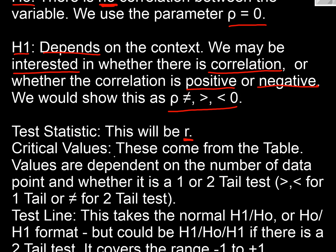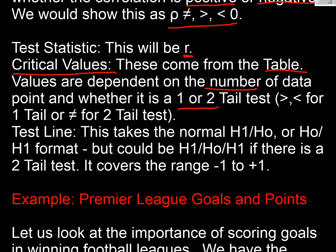The critical values, well we can get these from Pearson's tables. Things we need to know in order to use it are the number of data items and whether we're applying a one-tail or two-tail test and the significance level. And from that we can create a test line as we've done in the others. It could be a H1/H0 line, it could be a H0/H1, or it could even be a H1/H0/H1 covering the range of correlation coefficients from minus one to plus one.